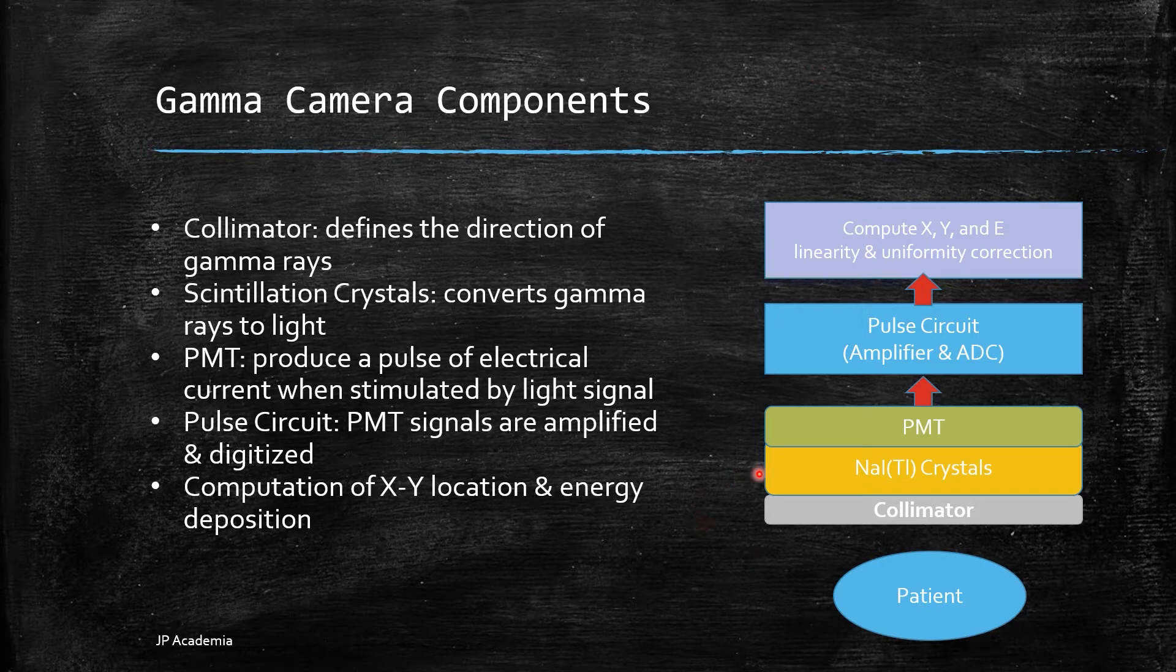The scintillation crystals, shown here in yellow, commonly made out of sodium iodide doped with thallium, converts gamma rays to light. Its main function is to absorb the gamma photons and convert it into a light image.